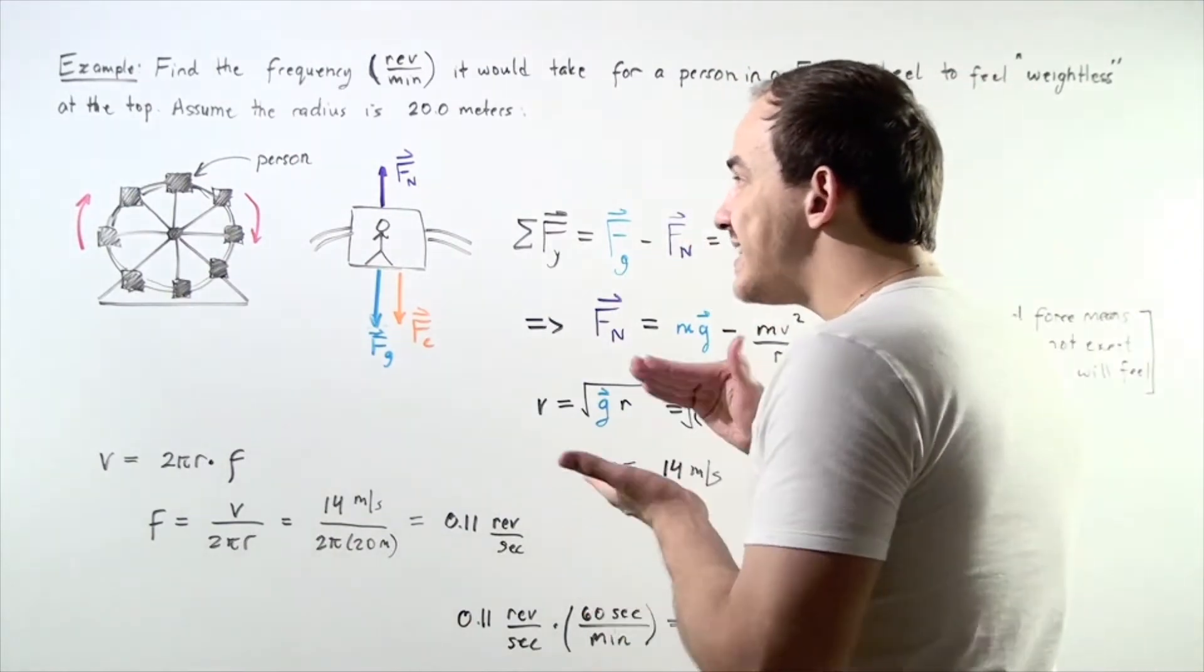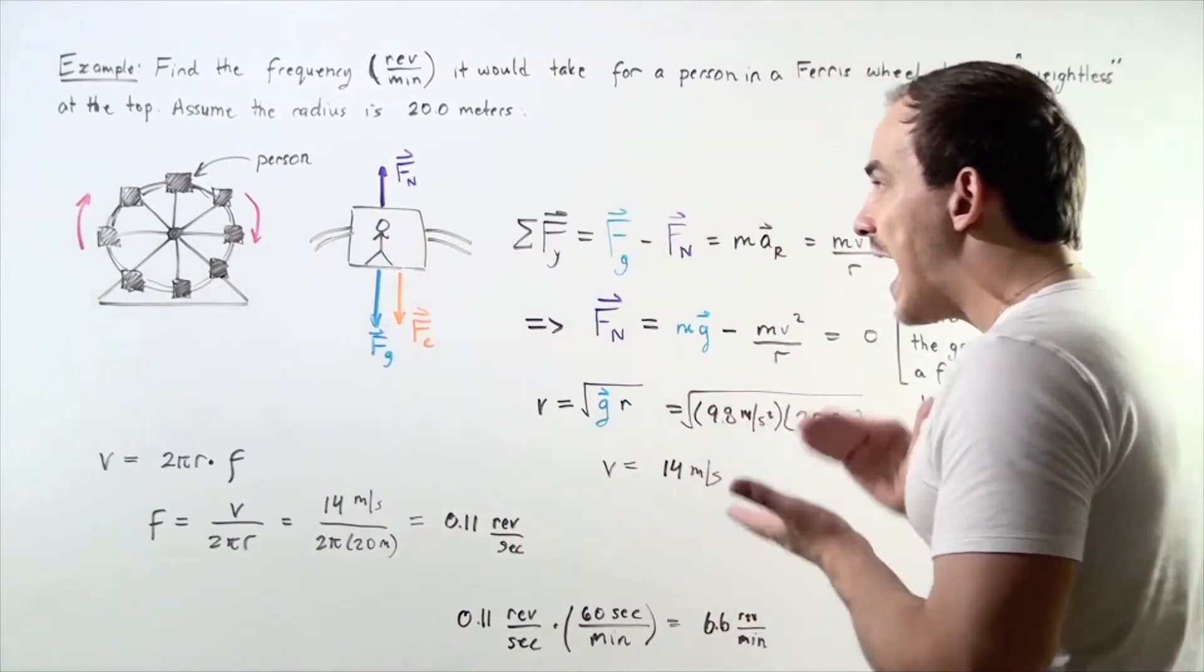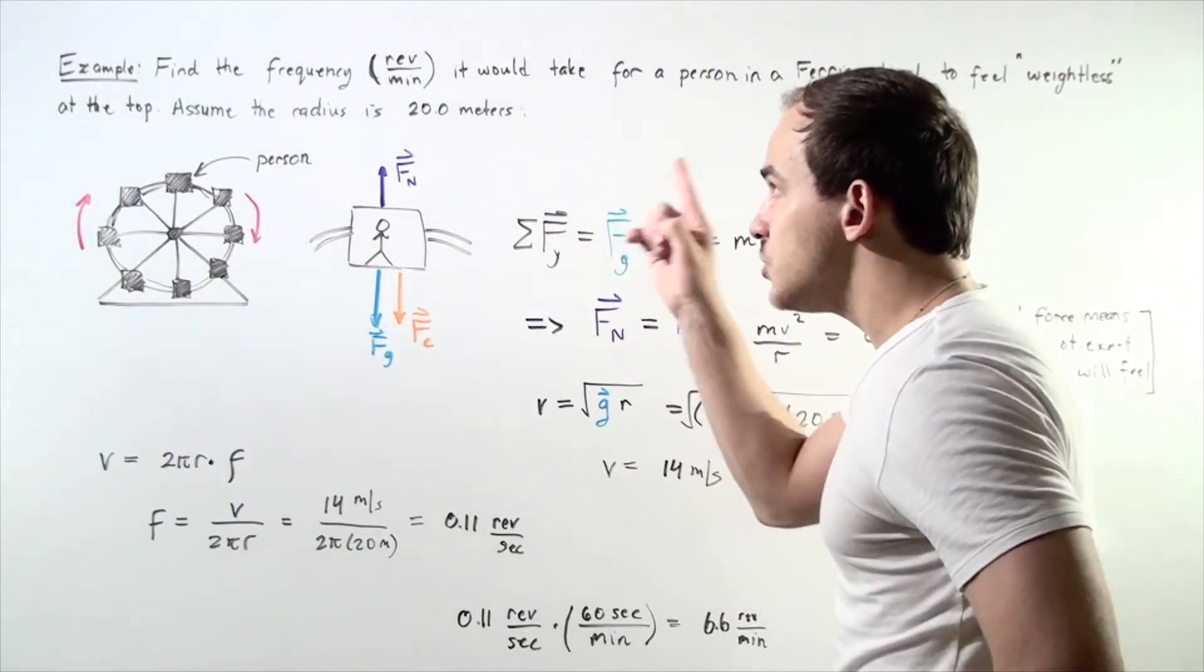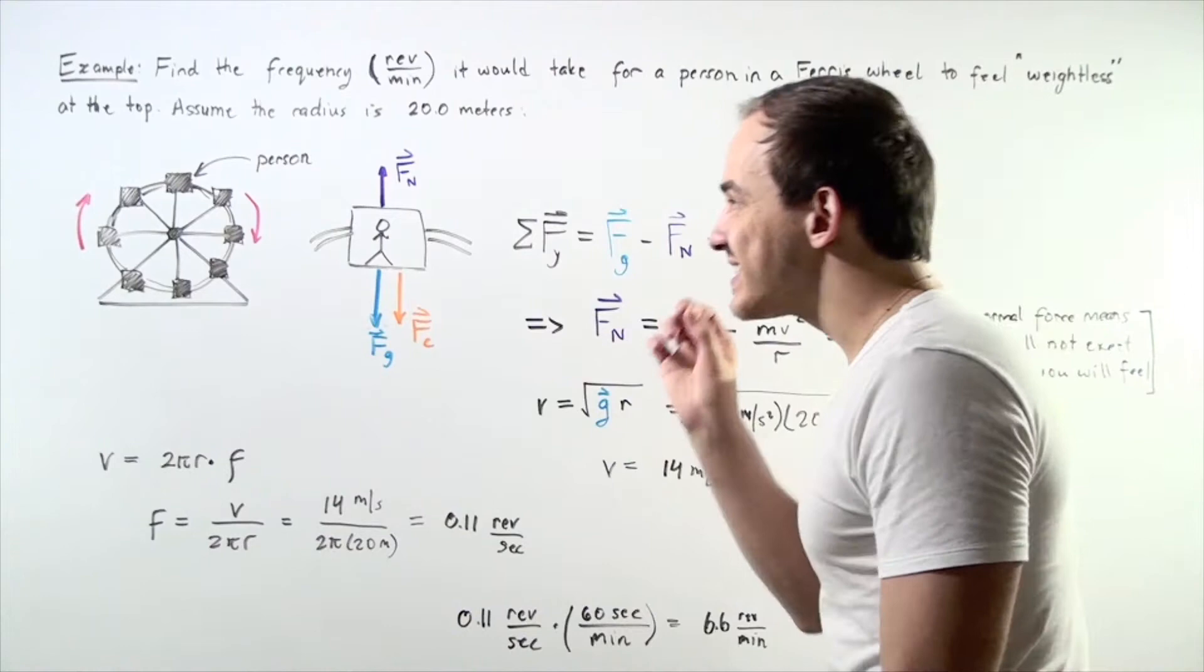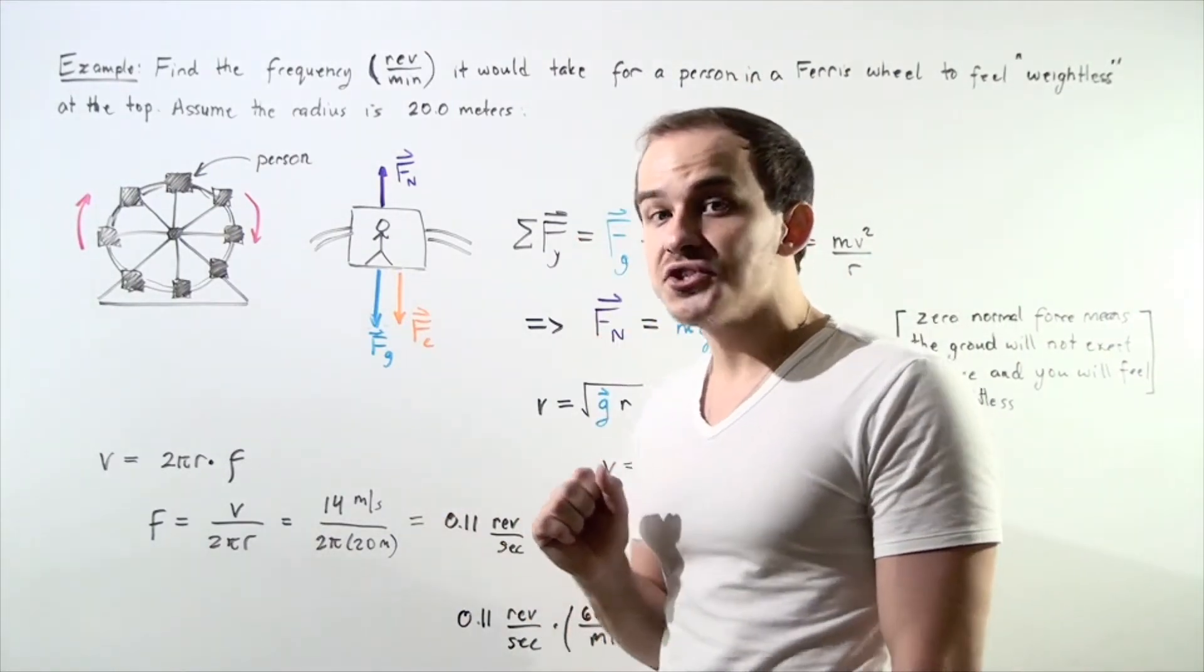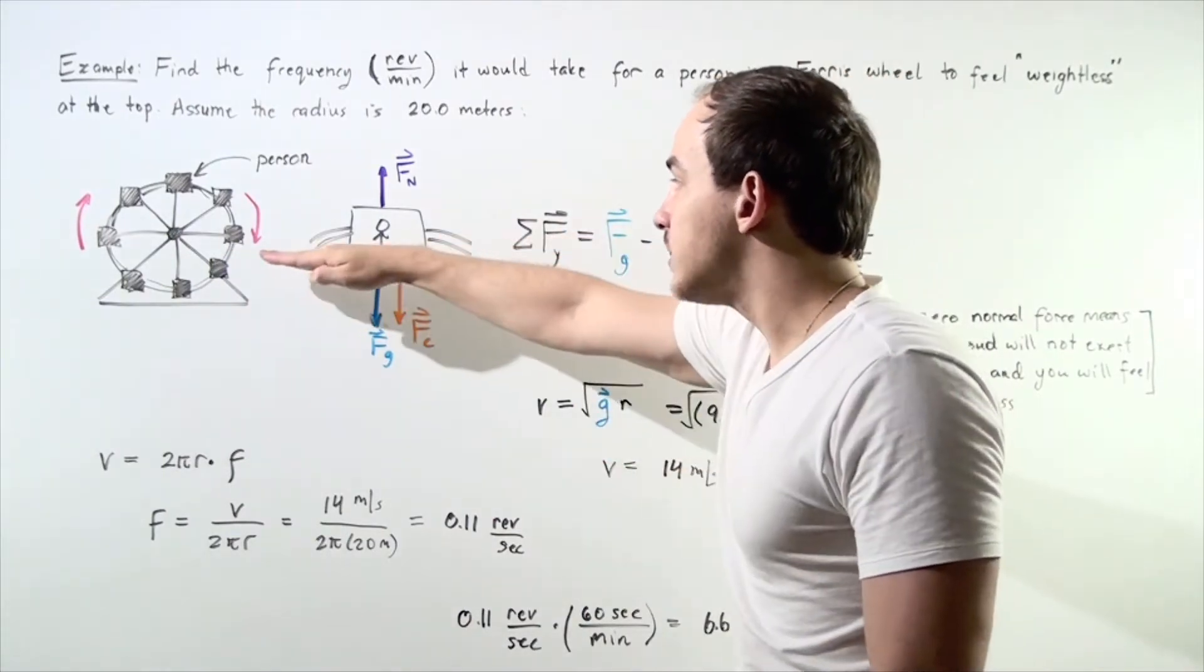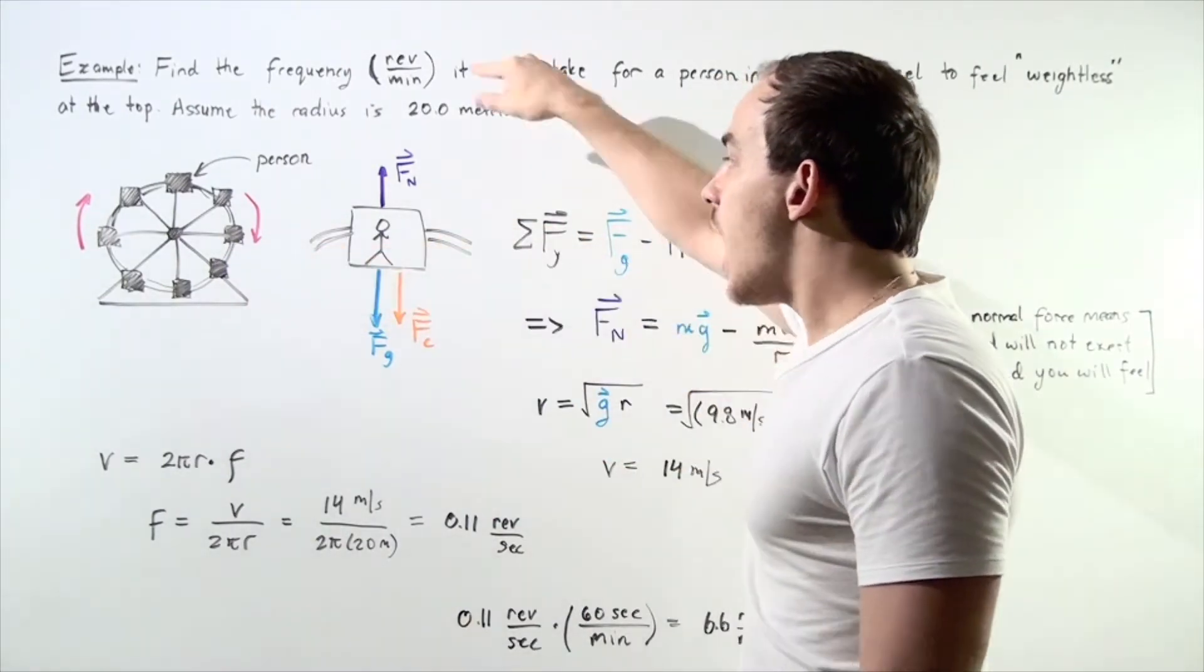If a person is standing on a scale, we want to figure out what our frequency should be so that the scale reads zero. Remember, what the scale actually reads is the normal force created by the ground, by the bottom of the cabin on the person.